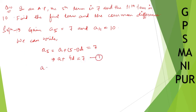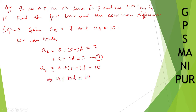And a₁₁ is equal to a plus (11 minus 1)d, which is equal to 10. So, a plus 10d is equal to 10. This is equation number two.